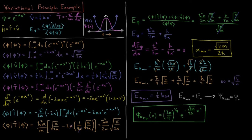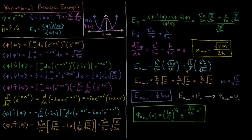Our energy of the trial wave function is the expectation value of the Hamiltonian, which equals the expectation value of kinetic energy plus the expectation value of potential energy. Substituting in our results, we get h-bar squared alpha over 2m plus k over 8 alpha, with every term carrying a factor of square root of pi over 2 alpha that cancels. So the energy is h-bar squared alpha over 2m plus k over 8 alpha. Our parameter is alpha.